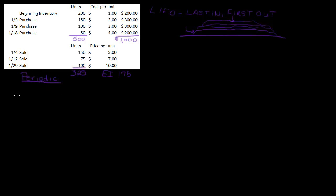Let's start going through periodic. Remember, periodic means we're only calculating at the end. You could say we sold 325 units total and count backwards, but let's do this by sale. On 1-4, I sold 150 units. We're going to take those from the last units that came in. So under this method, I'm going to take 50 units at $4.